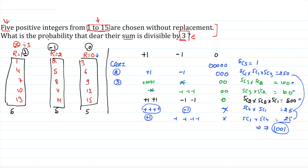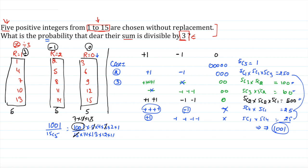The probability is favorable outcomes divided by total outcomes. Selecting 5 from 15 gives 15C5 as the total. So probability = 1001 / 15C5 = 1001 / (15×14×13×12×11 / 5!) Simplifying: 11 and 13 cancel, 7 and 14 cancel, leaving 4 and 12, giving a final answer of 1/3.